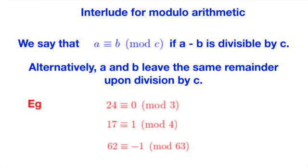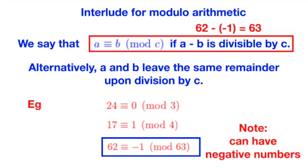We have provided a few examples which you can check and verify below, but I just would like to point out that numbers themselves can be negative. As an example, 62 is congruent to minus 1 modulo 3, because going back to our original definition, we have 62 minus minus 1 equals 63, which of course is divisible by 63.